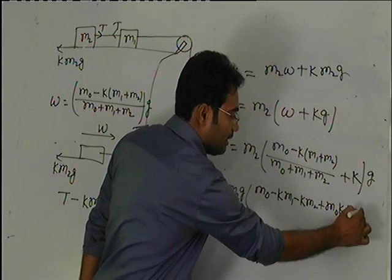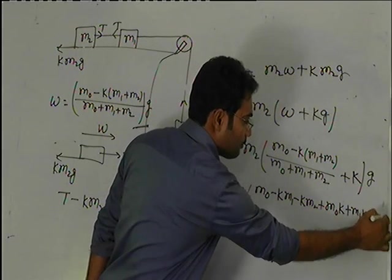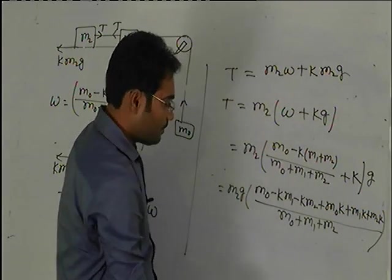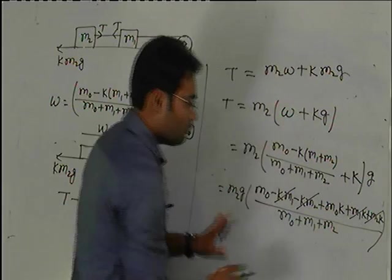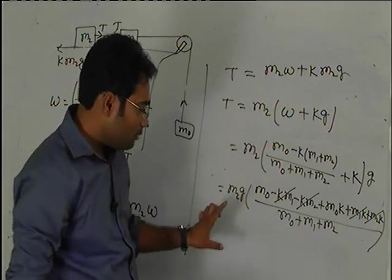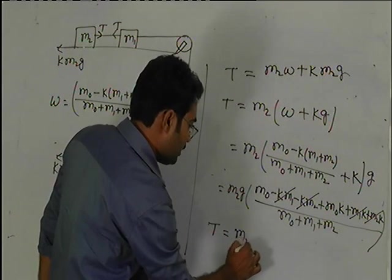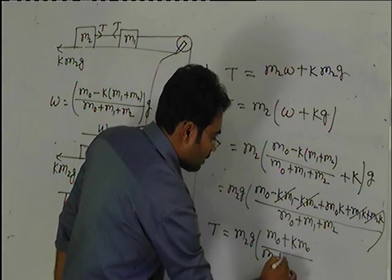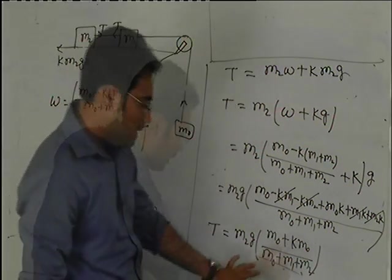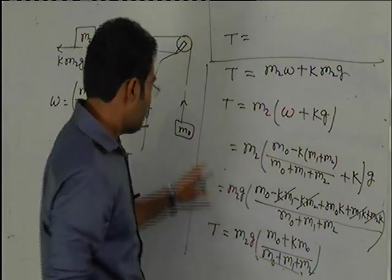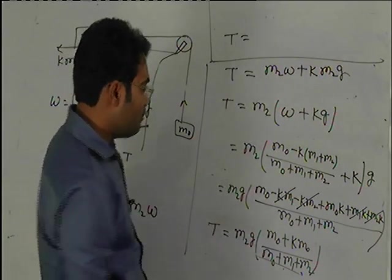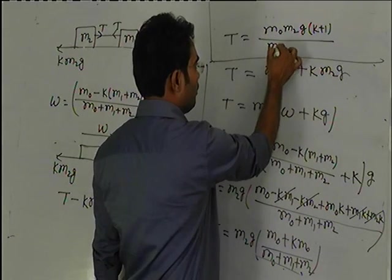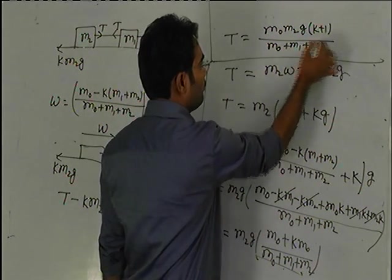This will become KM0 plus KM1 plus KM2 by M0 plus M1 plus M2. KM1, KM2 cancel. This final calculation: T equals M2G times M0 plus KM0 by M0 plus M1 plus M2.